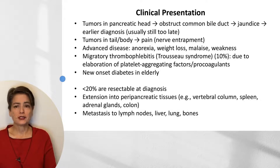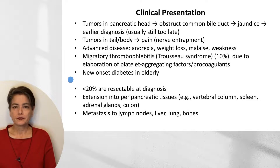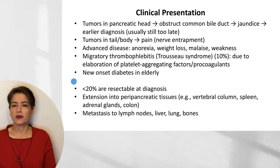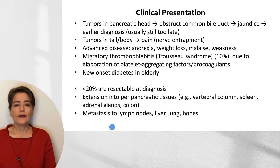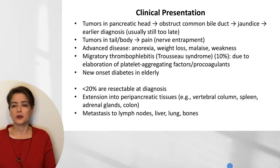New-onset diabetes in the elderly should raise suspicion of pancreatic adenocarcinoma. Because the pancreas is buried deep in the body, less than 20% of tumors are resectable at diagnosis — they typically extend into peripancreatic tissue such as the vertebral column, spleen, adrenal glands, and transverse colon. They also tend to metastasize widely to lymph nodes, liver, lung, and bones.